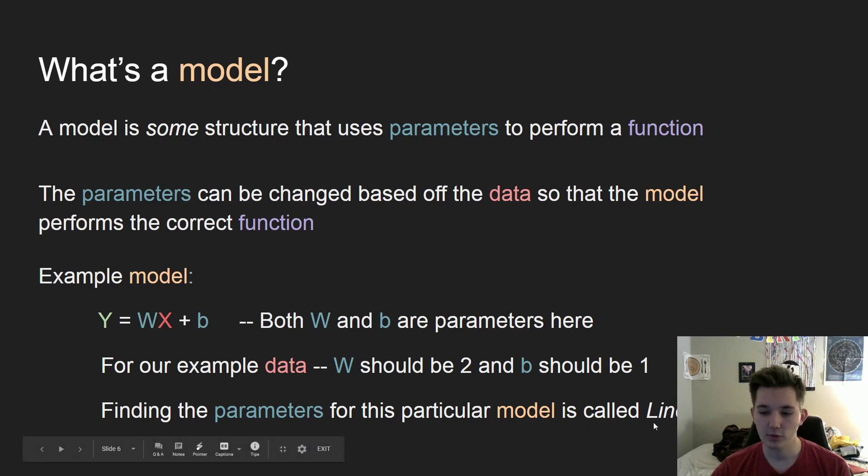And finding the parameters like in this exact example, having y equals wx plus b is called linear regression. So we're going to be doing regression and only finding a linear function. So if you ever hear the term linear regression, this is what we're doing is we're finding this w value and this b value to fit to our data.